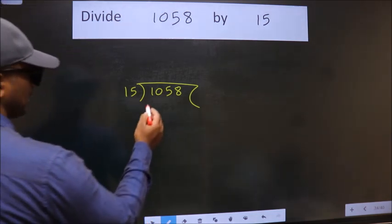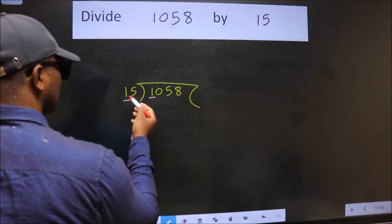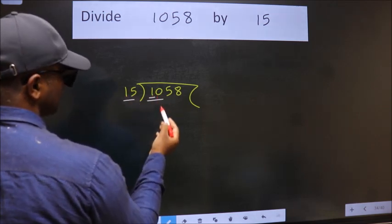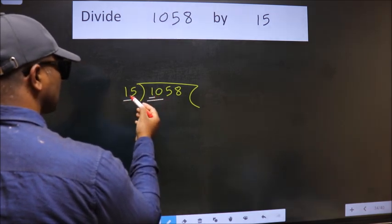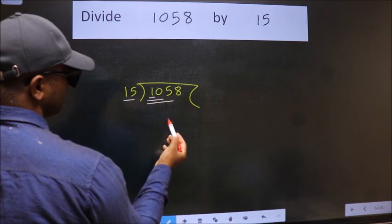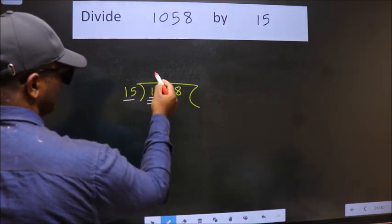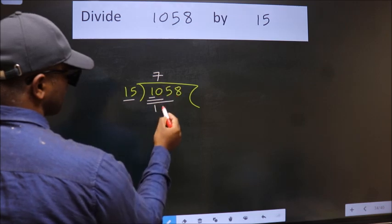Here we have 1, here 15. 1 is smaller than 15. So we should take two numbers, 10. 10 is still smaller than 15, so we should take three numbers, 105. When do we get 105 in 15 table? 15 times 7 is 105.